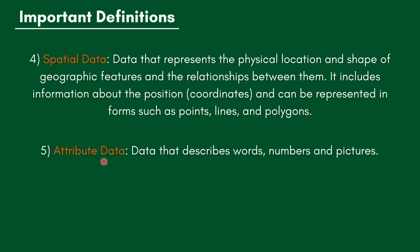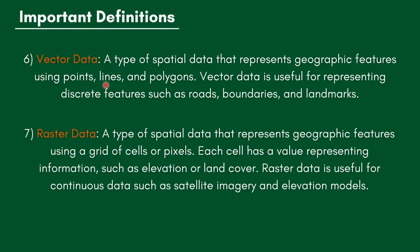Attribute data describes words, numbers, and pictures. Vector data is a type of spatial data that represents geographic features using points, lines, and polygons. Vector data is useful for representing discrete features such as roads, boundaries, and landmarks.